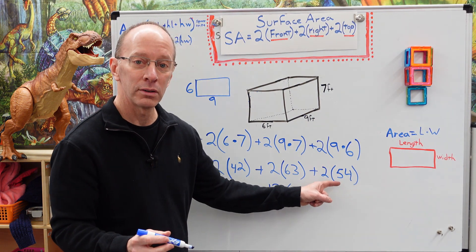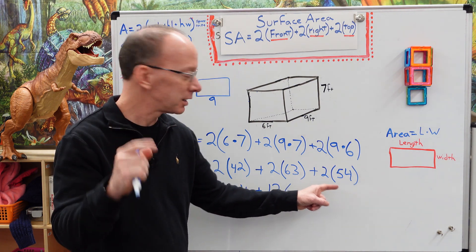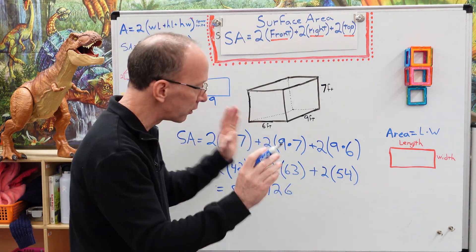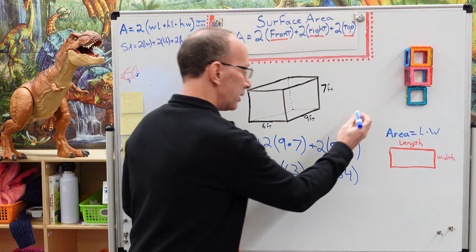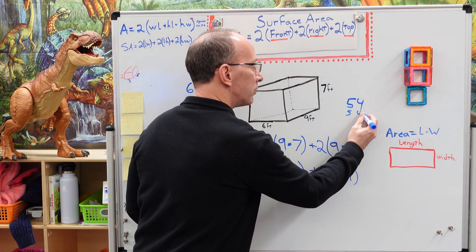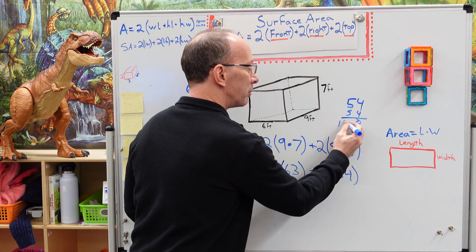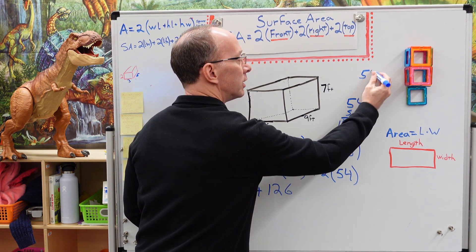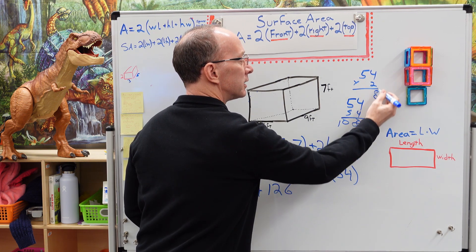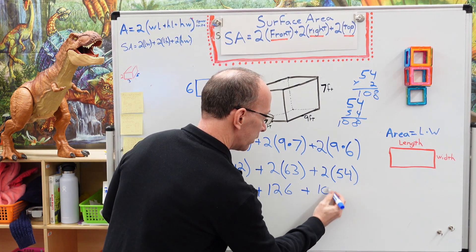Plus 54. Can you do that mental math? Four plus four is eight and five plus five is 10. Now, if you can't do it mental math, you know, write it out if you need to. There's no problem. You can do 54 plus 54 if you want to do it that way. So you can see that would be an eight and that would be a 10. Or you can do 54 times two. So four times two would be eight, two times five would be 10. Okay, so we have plus 108.